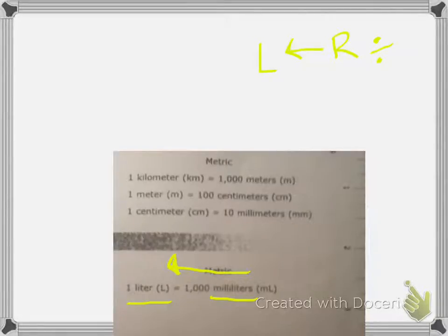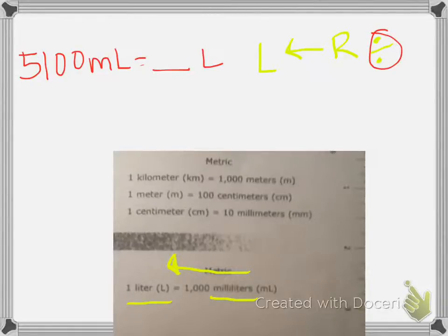Now keep in mind that you started out with 5,100 milliliters. But because you are dividing, it is getting smaller. This number needs to get smaller.